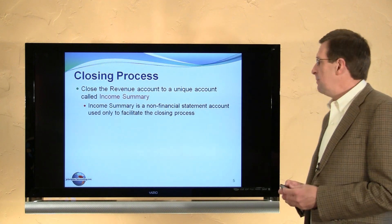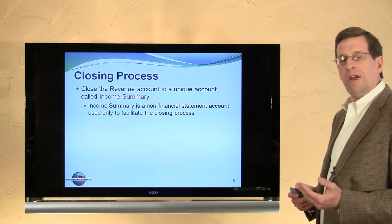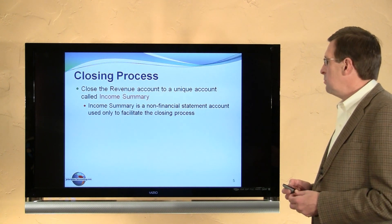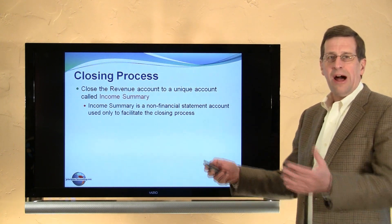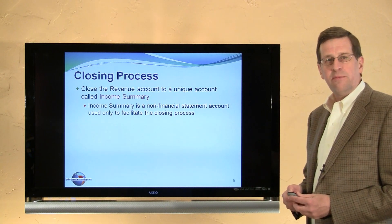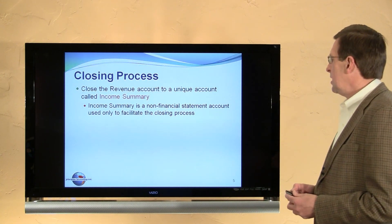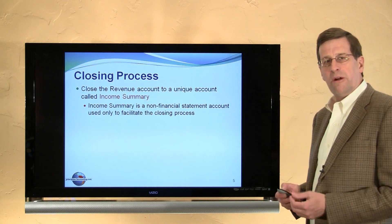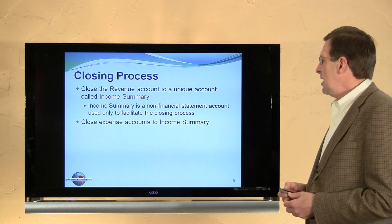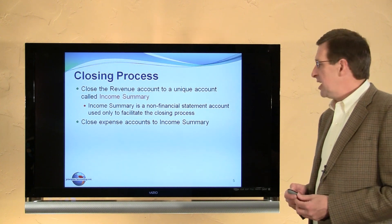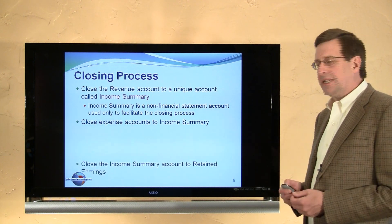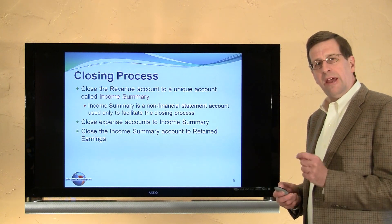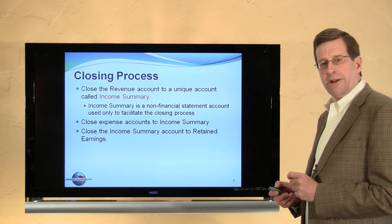Let's look at the closing process in steps. We can first think of closing the revenue accounts. In the closing process we introduce another account called income summary. Essentially that's a corral where we gather up all of the information about all revenues and expenses. It's not a financial statement account at all — it's just an account used temporarily in the closing process. Similarly, we would close the expense accounts to income summary. Once that's done, the balance of income summary would reflect the amount of net income for the period, which is then closed to retained earnings.